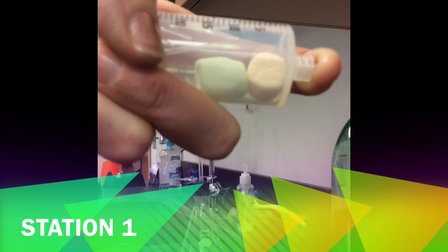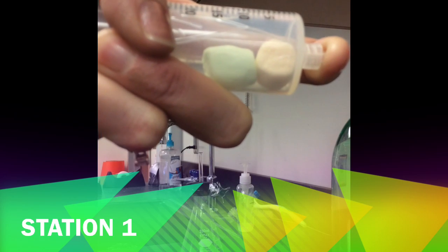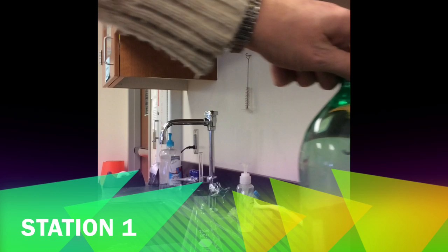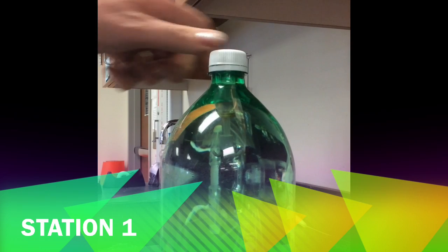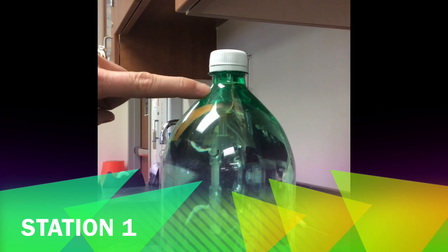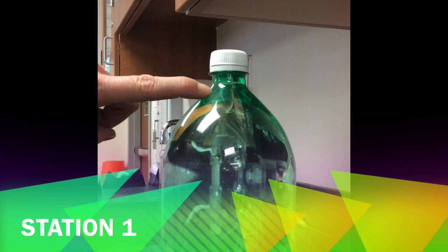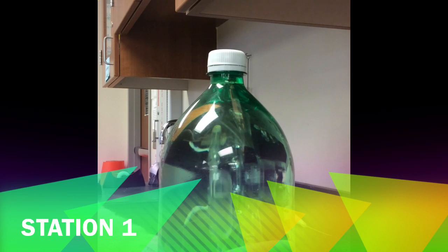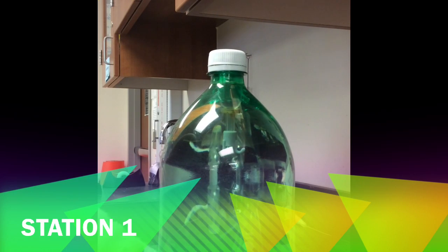At station one we also have this guy, this is called a Cartesian diver. So up at the top it's got a pipette with a little bit of water in it. This whole tube is filled with water and when I squeeze it dives to the bottom and when I let go it comes back up to the top.